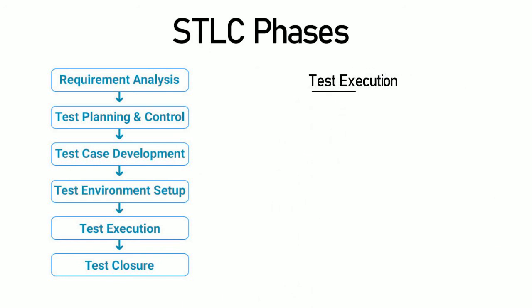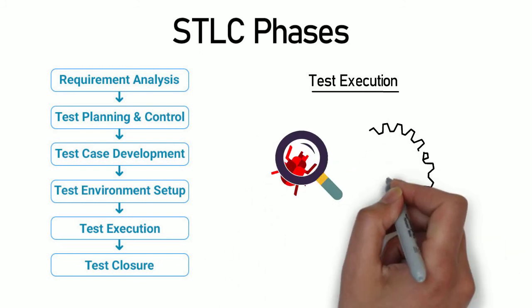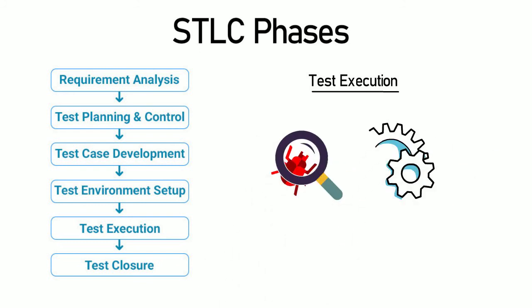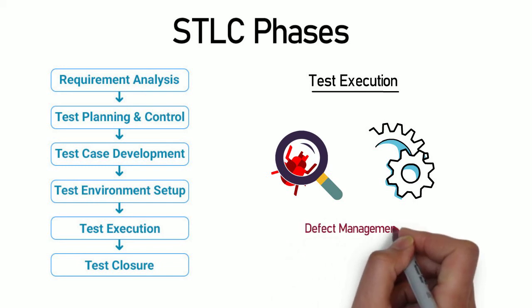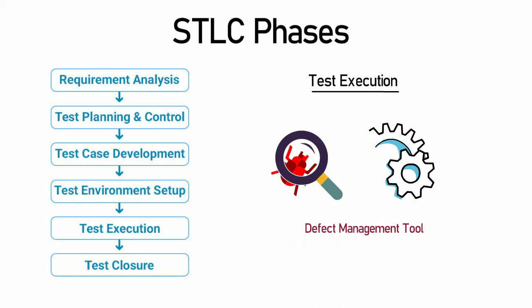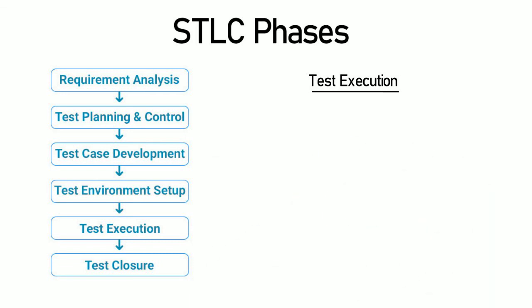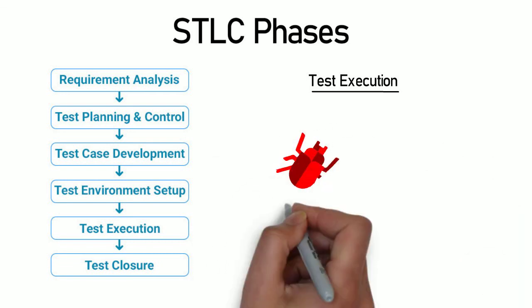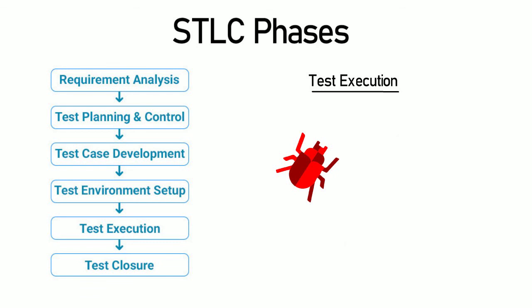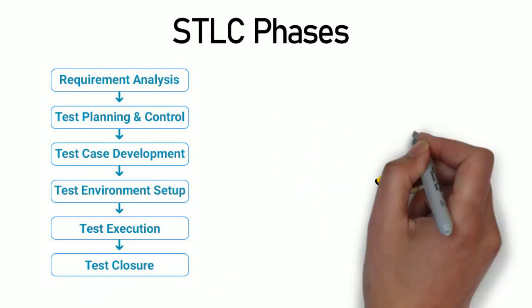Test Execution: this phase involves manual and automated test case execution. During test case execution, any deviation from the expected result leads to creation of defects in a defect management tool like Jira, Bugzilla, Mantis, etc. Once the development team fixes the bugs, the bugs are retested for validation.